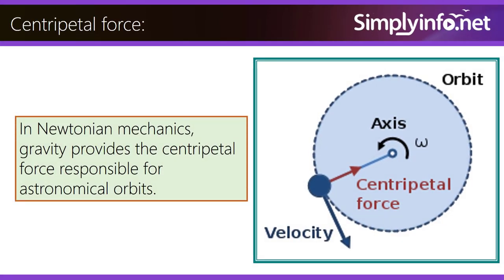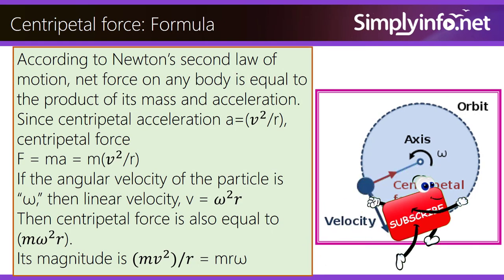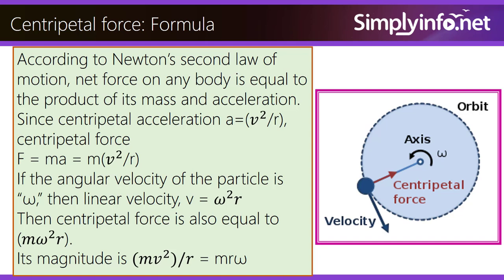In Newtonian mechanics, gravity provides the centripetal force responsible for astronomical orbits. According to Newton's second law of motion, the net force on any body is equal to the product of its mass and acceleration. Centripetal acceleration (a) is equal to v² divided by r, and centripetal force F is equal to ma, which equals mv²/r.